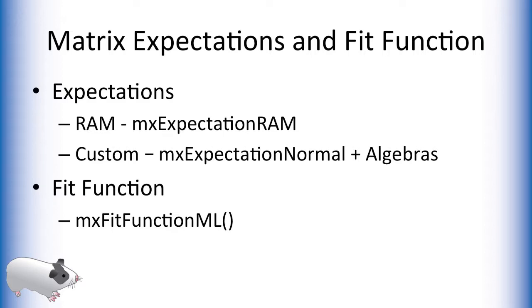The maximum likelihood fit function that OpenMX uses minimizes the difference between the expected covariance matrix and the observed covariance matrix of data. In this portion of the video series, we will mostly be focused on RAM type expectations.